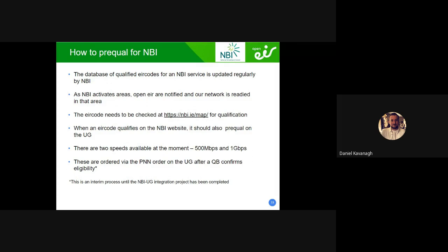The MBI database is updated every month or every second month. Once the file is loaded, customers will immediately qualify. We work in tandem with MBI — we build interconnects out to the chambers where the MBI network terminates, we splice onto it, and try to align readiness with order time so there's no delay. If the air code qualifies on the MBI map but you can't place an order, come to us and we'll give you an update on what's happening with the interconnect. If an air code qualifies on the MBI platform, it should also peak on fibre to the home — two speeds at the moment, flipping to two gigs soon.